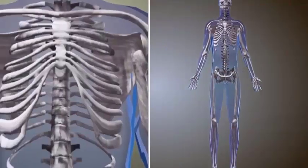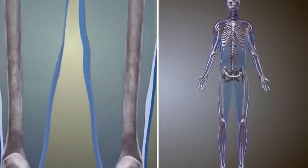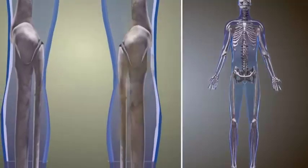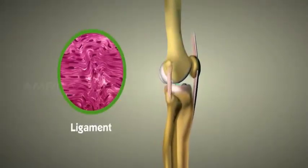Bone cells secrete calcium that hardens the bone and supports the main organs of the body. Bone cells are solid. Ligaments function as a connection between bones. They are fibrous and stretchy.